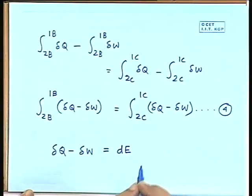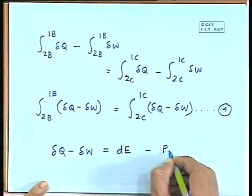We have started from the statement of the first law of thermodynamics, which is given for a cycle, and from there we can write the statement of thermodynamics or have some sort of mathematical expression for what will happen when only a process is there. We are now getting the mathematical expression of thermodynamics for a process.